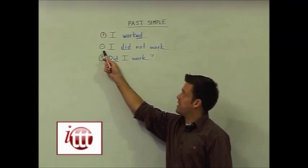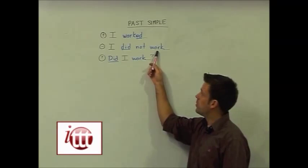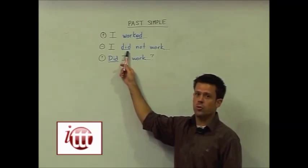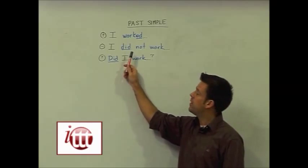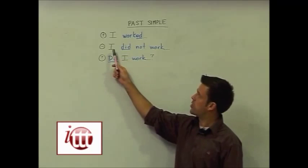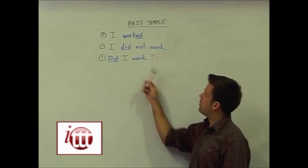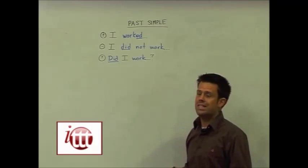For the negative sentences, rather than changing the verb, the main verb, we add our helping verb, the auxiliary verb, in this case being do. So I've changed do to did to indicate the past, and it results in a sentence structure such as I did not work. Now, did not is the full form. Obviously, we can contract this into didn't.